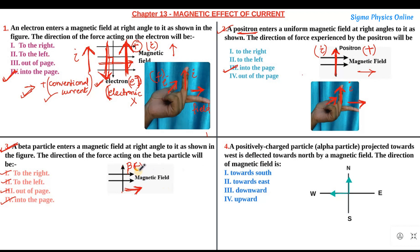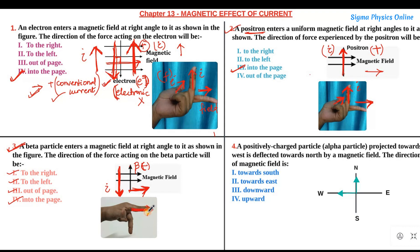The beta particle is a negatively charged particle going upwards. Since we have to point our middle finger in the direction in which a positively charged particle will be moving, and the beta particle is moving upwards, the current due to the flow of positive charges will be moving downwards. So in this question the current direction is downwards, and the magnetic field is from left to right. The forefinger representing the magnetic field points to the right, and since the negatively charged beta particle goes upward, the positively charged particle moves downward.